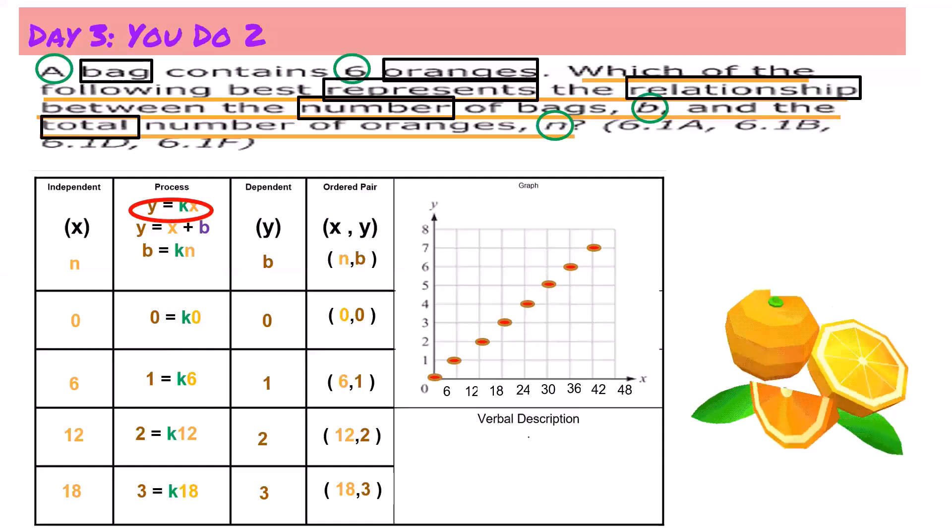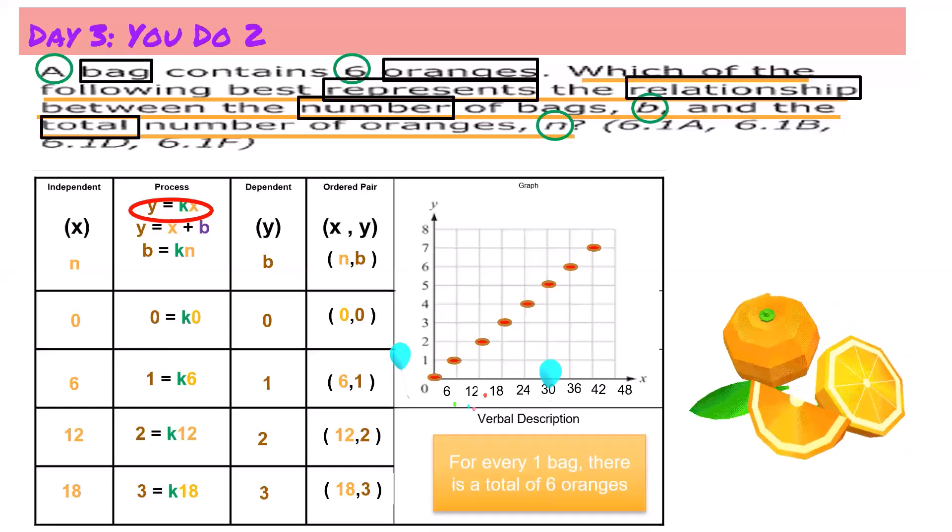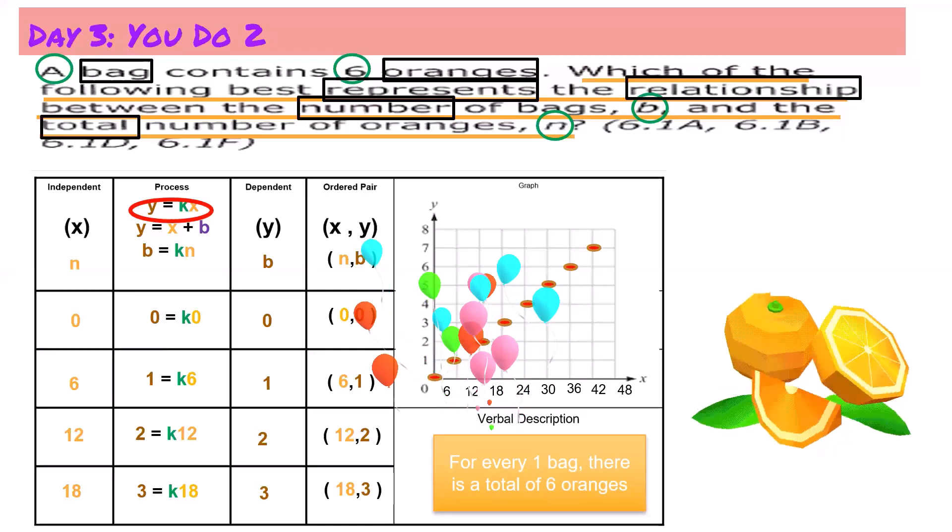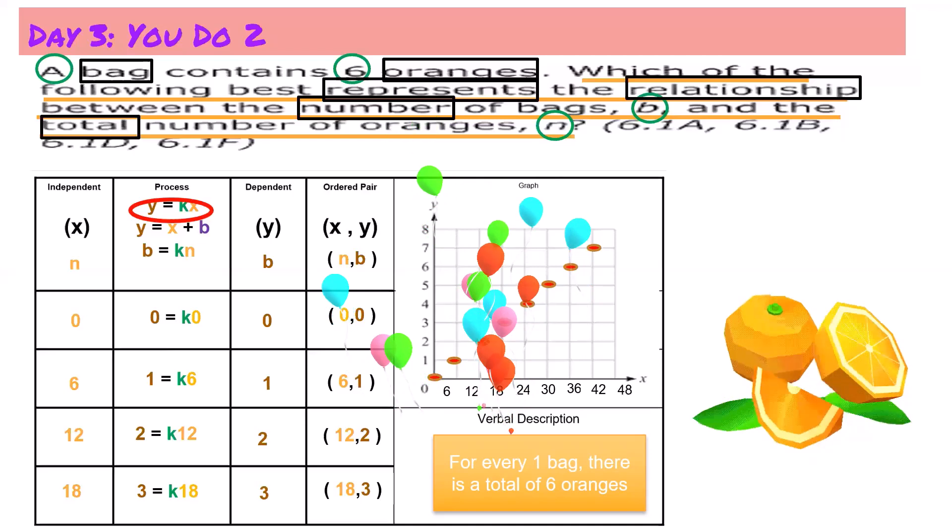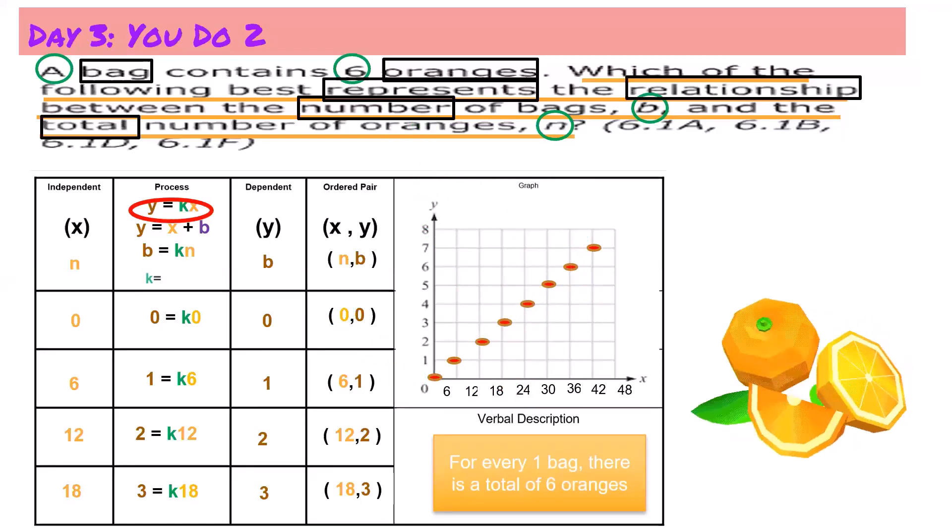Now let's see if we can think of a verbal description that would fit our rate, our constant rate. And what I see is for every one bag there is a total of six oranges. So when we look at our constant rate of proportionality and we think about our rise over our run, we have a rise over run of 1 over 6.